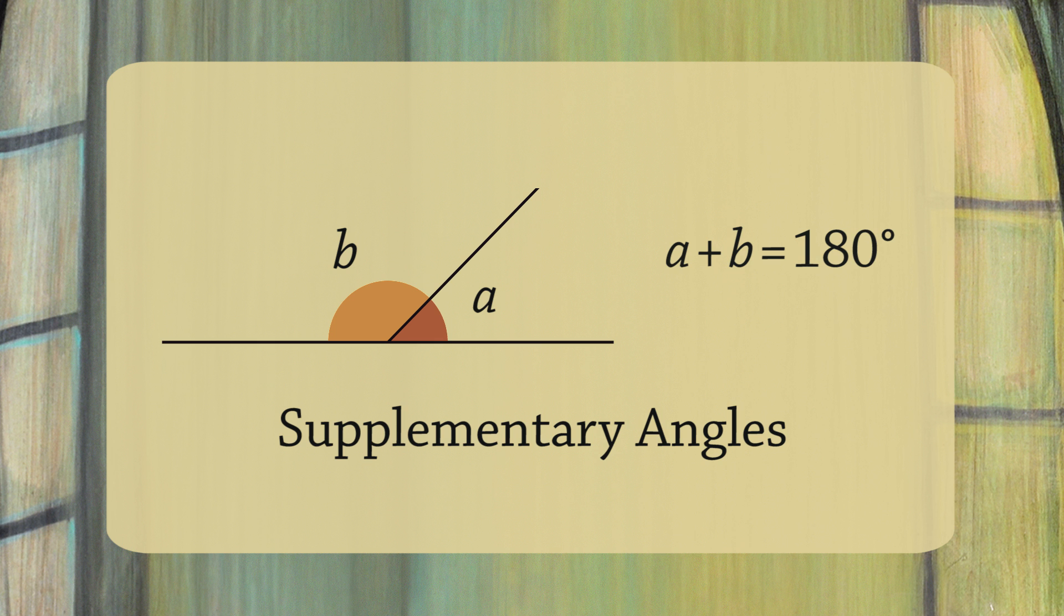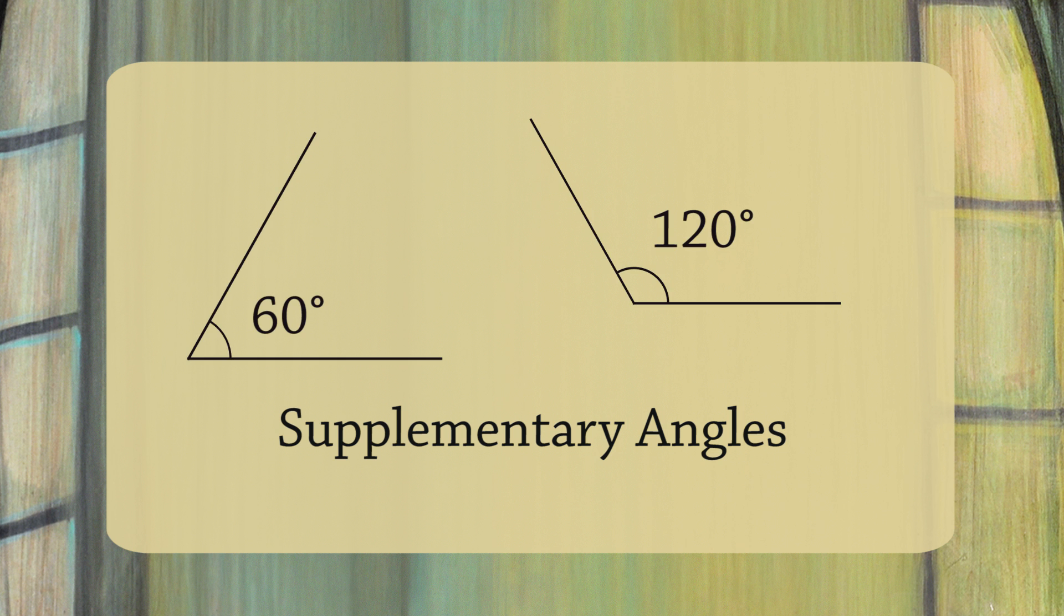The reason there's a name for this special case is because in geometry and trigonometry, you'll encounter this situation a lot. Do note that two angles don't have to be next to each other to be supplementary. For example, these two angles are supplementary because their sum is 180 degrees.